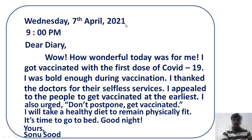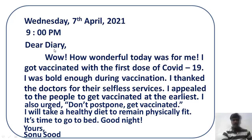For time, simply write 9 PM using capital letters. After 2021, no full stop or comma is needed. For the salutation, write 'Dear Diary' with a comma — capital letter for 'Dear' and capital letter for 'Diary.' Note the spelling carefully: D-I-A-R-Y. Dairy — D-A-I-R-Y — refers to milk products; this is about a permanent personal record.